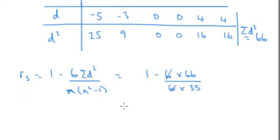Those 6s are going to cancel, so we're going to have 1 minus 66 over 35. Which is minus 0.886.